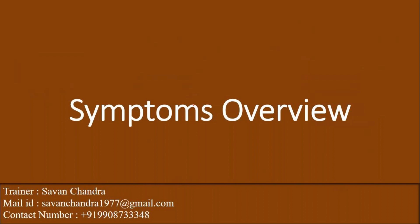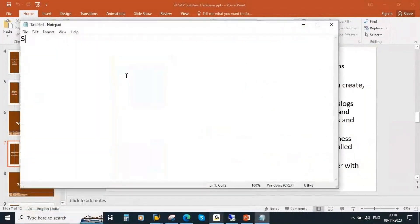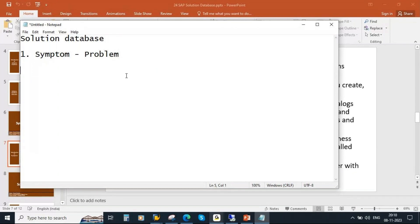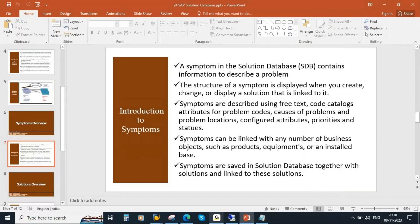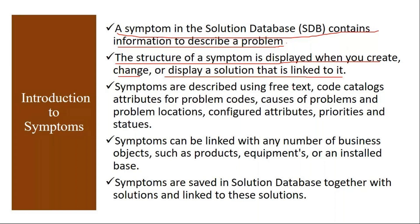The solution database contains two things: one is symptom and another is solution. A symptom in the solution database contains information to describe a problem. The structure of a symptom is displayed when you create, change, or display a solution that is linked to it. Symptoms are described using free text — you can directly enter text — or use code catalogs and attributes for problem codes. Using catalogs, you can also maintain the symptoms, along with causes of problems, problem location, configured attributes, priorities, and statuses.